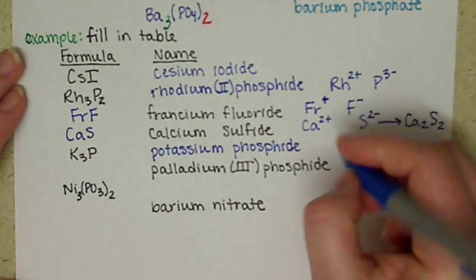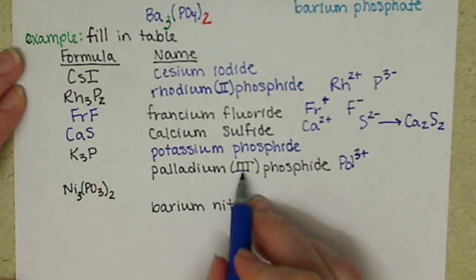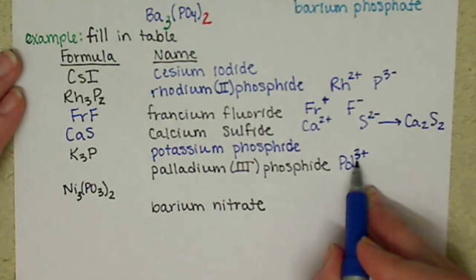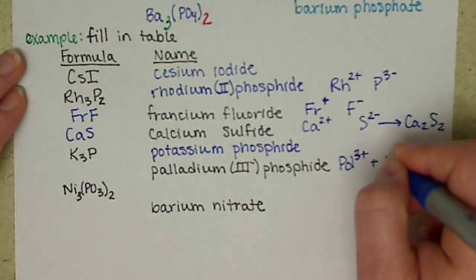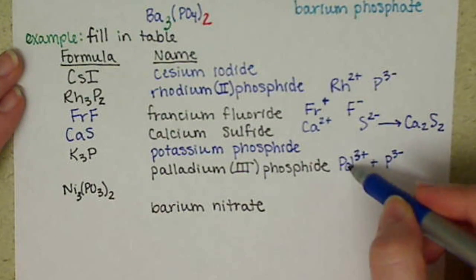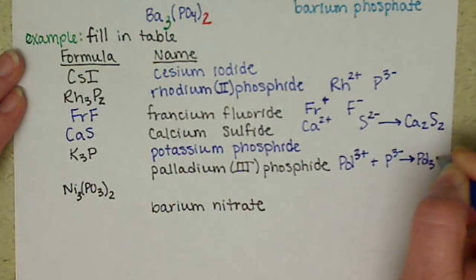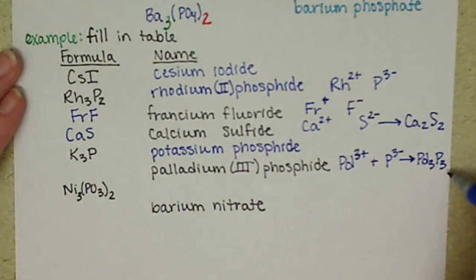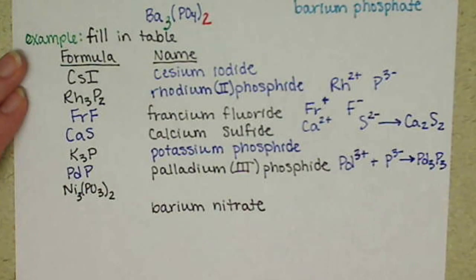For palladium(III) phosphide, we have Pd3+. Remember that Roman numeral tells us nothing about the formula, it just tells us the charge, so we have to figure out what our formula is. Phosphide has a 3-, we need a 1-to-1 ratio for that. Or if we do our cross-charge, we get Pd3P3, and we can reduce those down to a 1-to-1 ratio, so we have PdP.